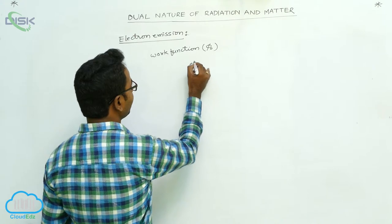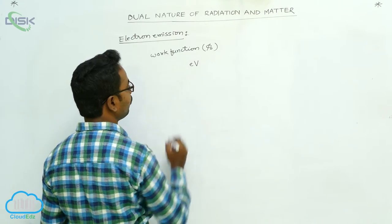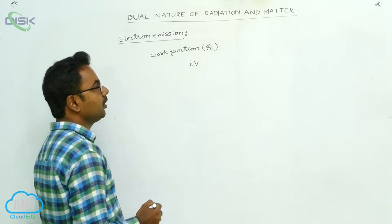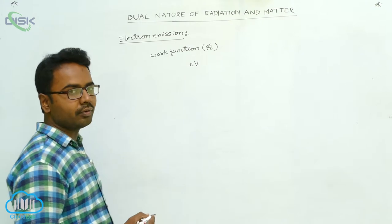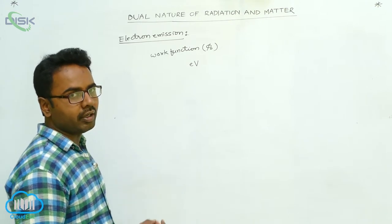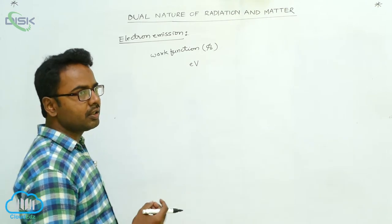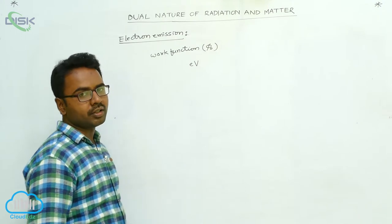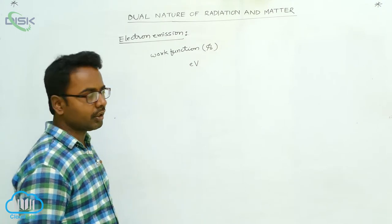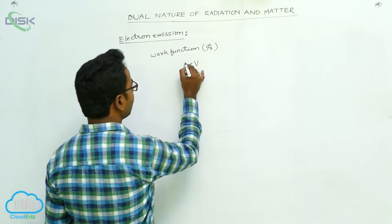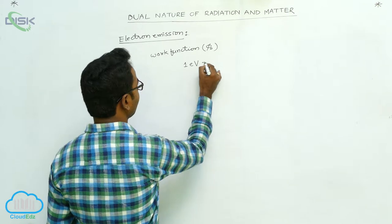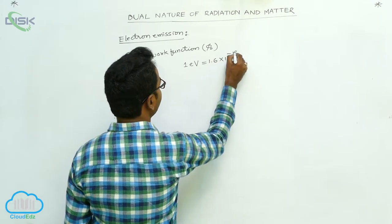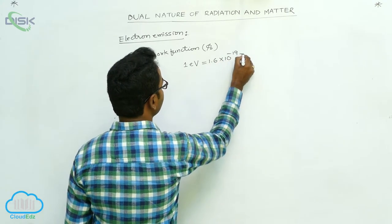Work function is measured in the unit of electron volt (eV). The reason it is measured in electron volt is that work function is a small amount of energy, so we use a small unit. One electron volt is equal to 1.6 × 10⁻¹⁹ joules.